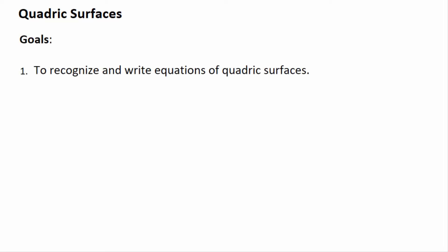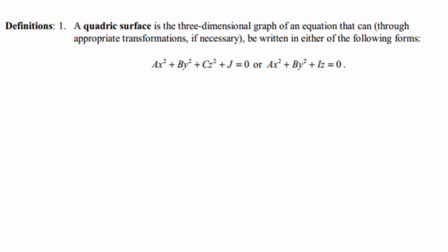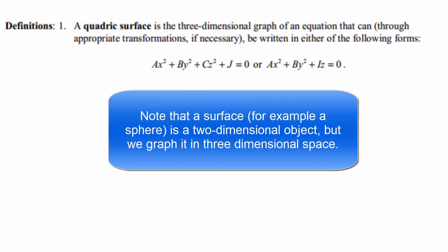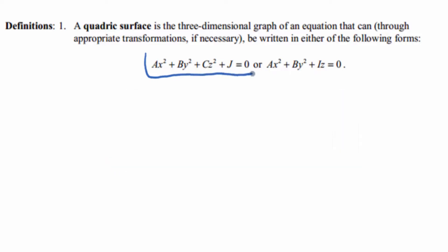The goal is to recognize and write the equations of quadric surfaces and to graph quadric surfaces by hand. So let's talk about the definition of a quadric surface. A quadric surface is a three-dimensional graph of an equation that can, through appropriate transformations if necessary, be written in one of the following forms.